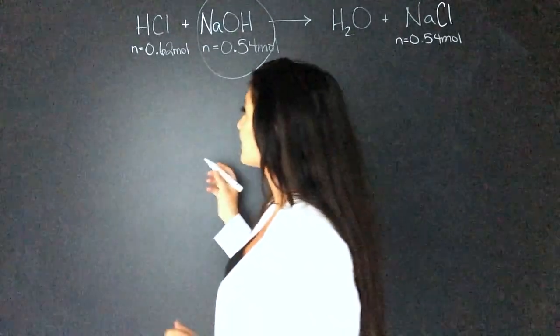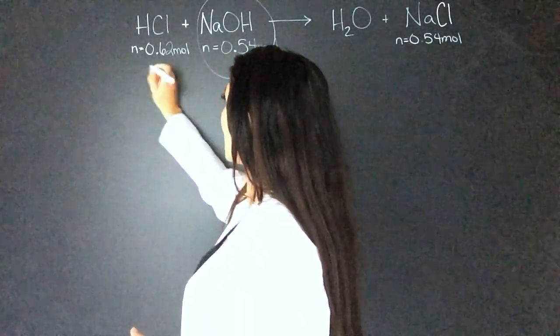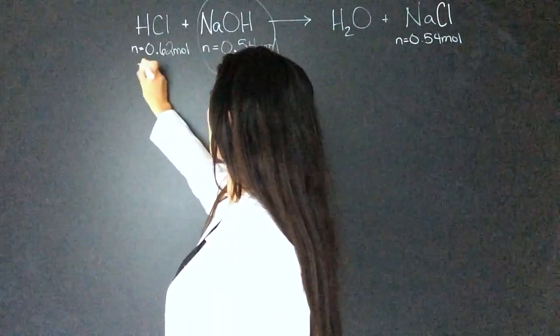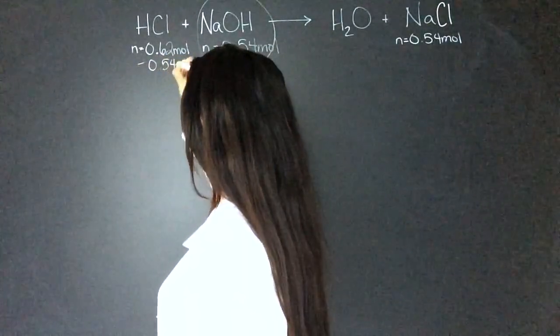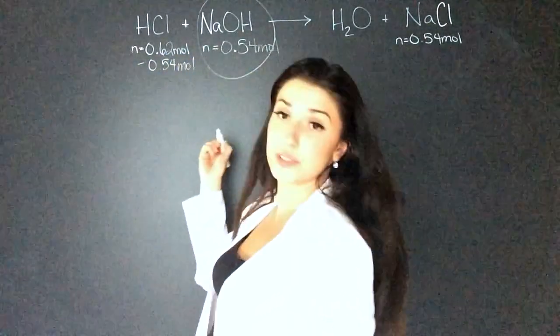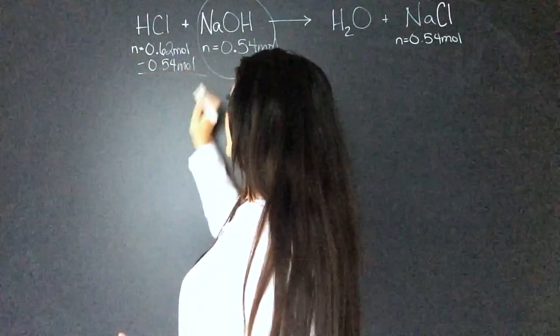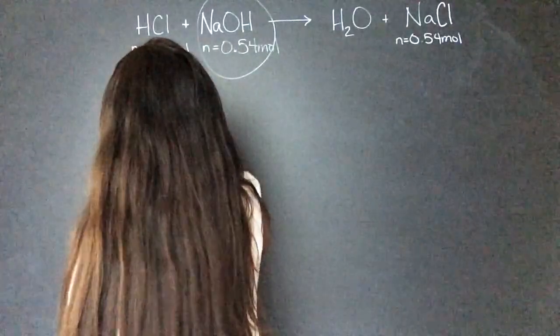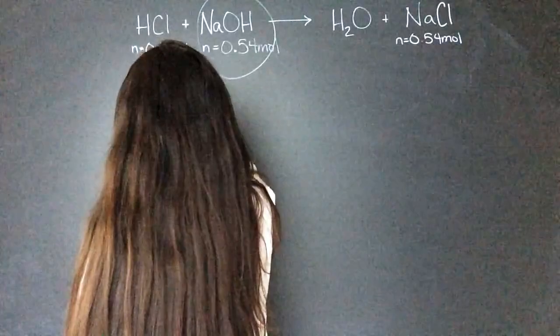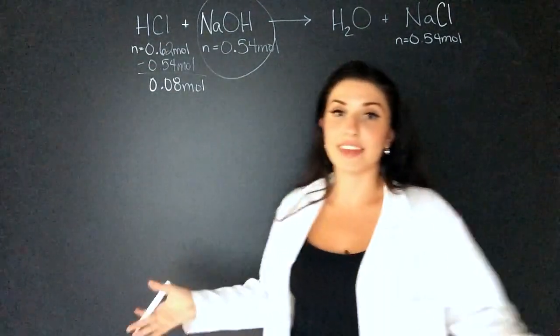So all we have to do is subtract. So 0.62 minus 0.54 mole, which is going to be used in the reaction, gives us 0.08 mole is left over. And there's question three.